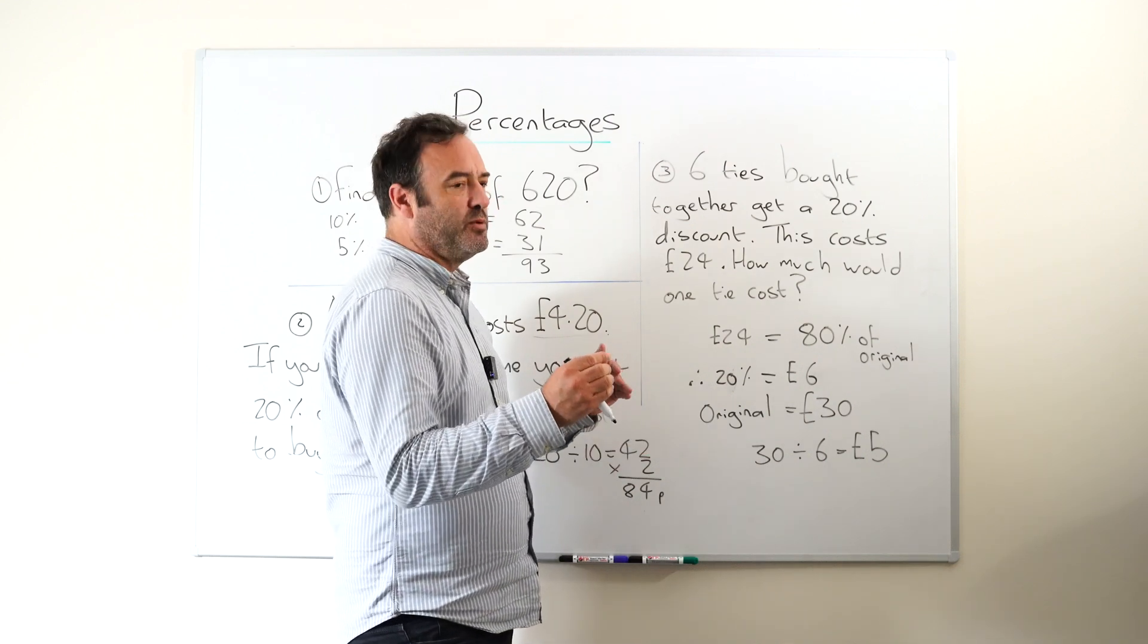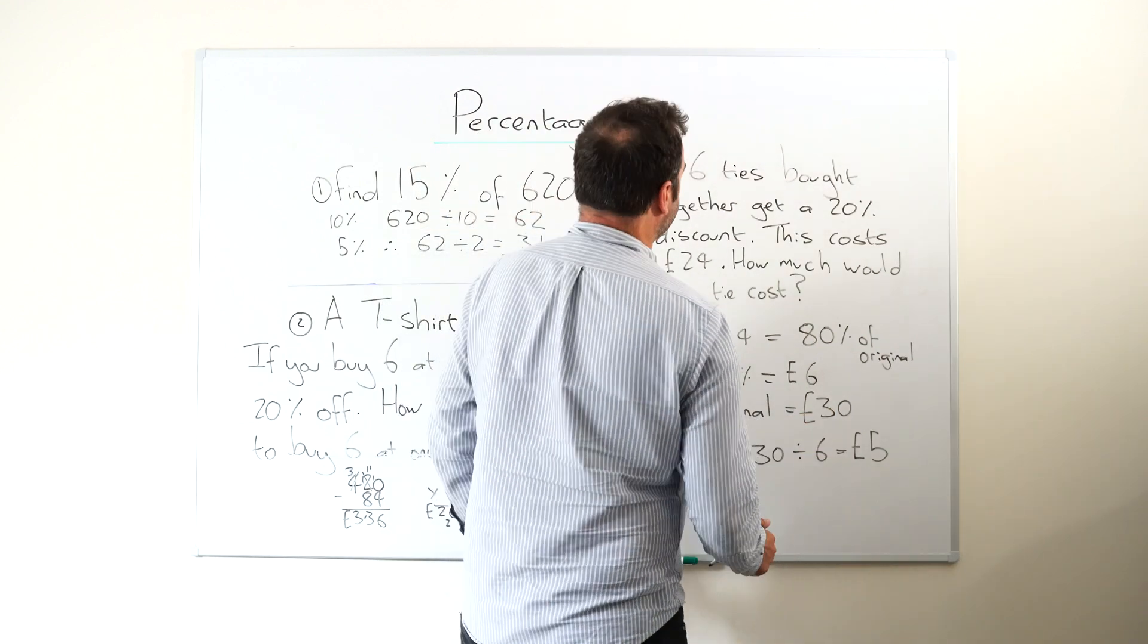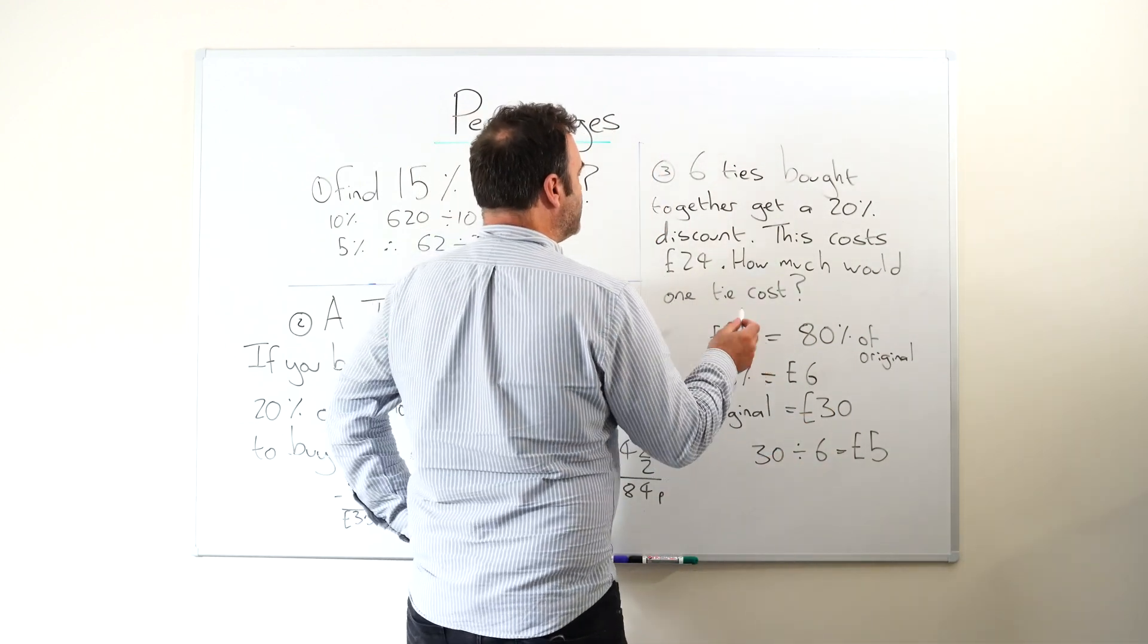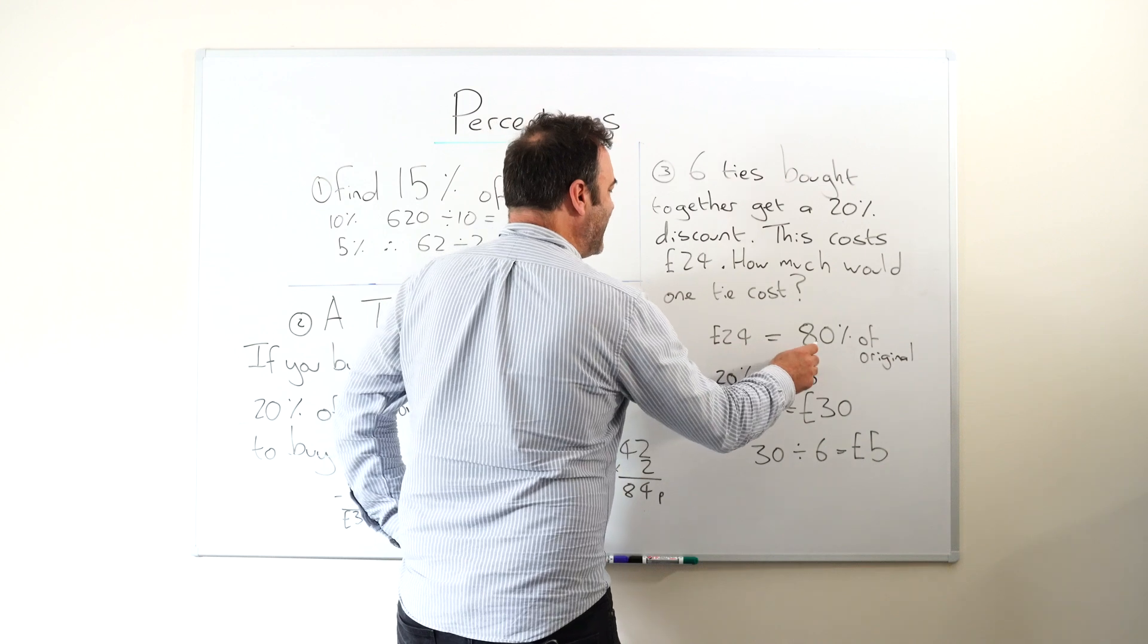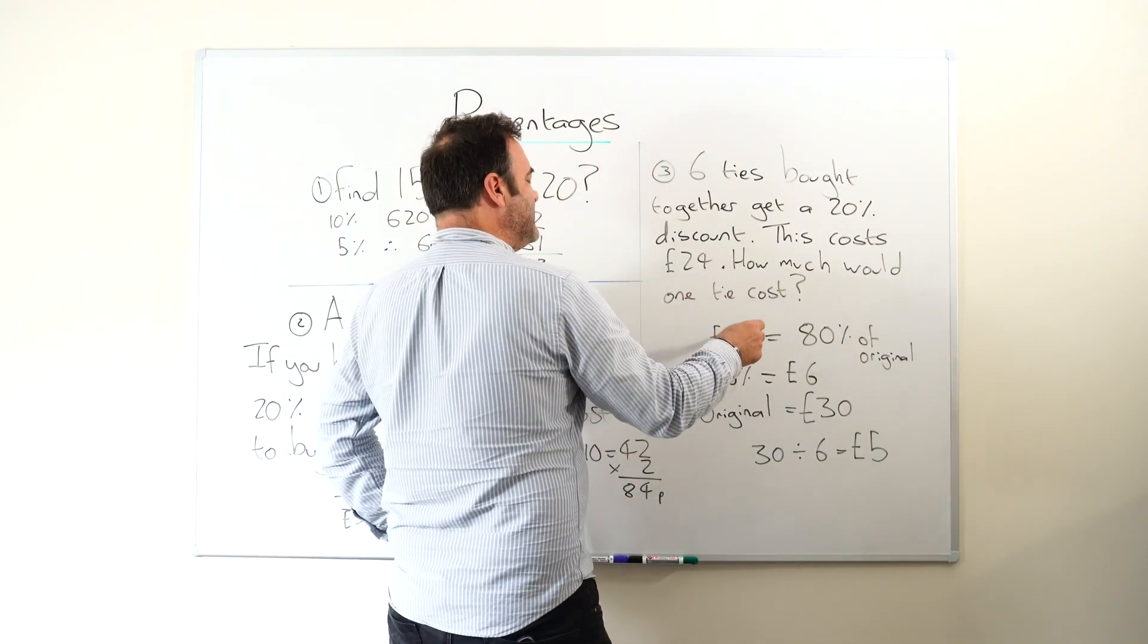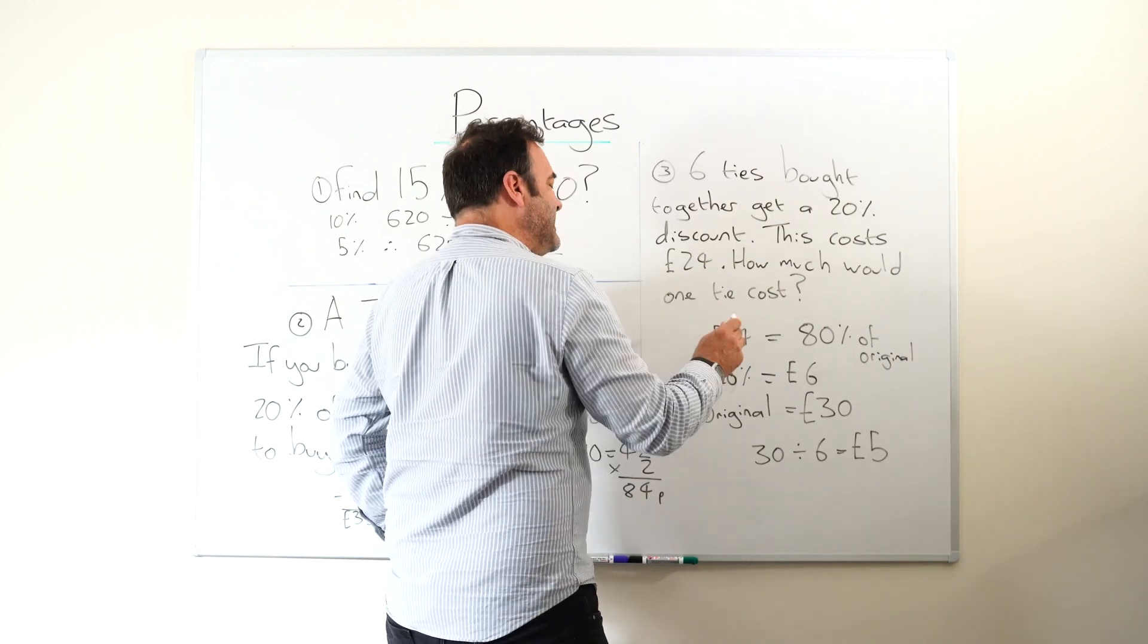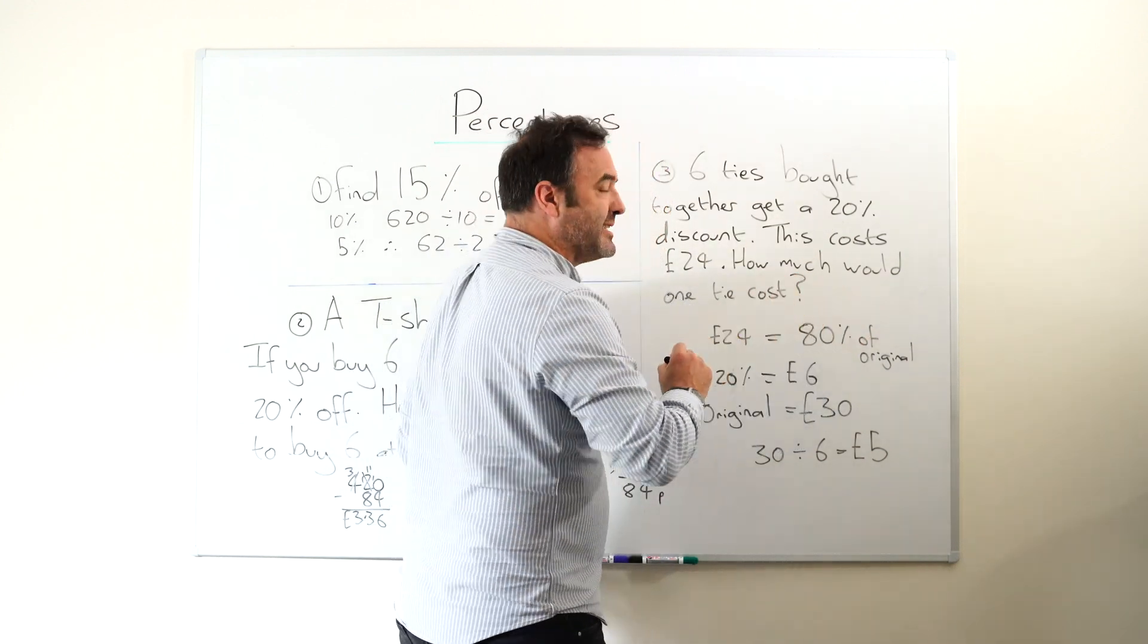six, we've actually got to work out what the original price is without the discount. And the way we do that is the following: we know that 24 pounds is actually 80% of the original. How do we know that? Because this is 100%, which is the original, take 20%. Now we've got it written out like this, it's actually quite easy to deal with.